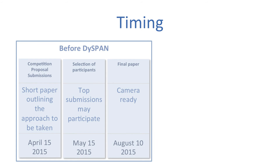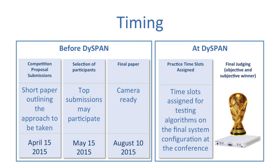To participate in the challenge, a two-page paper is to be submitted on the challenge track by April 15. The top submissions will be informed by May 15 that they can compete in the challenge. These teams can buy National Instruments hardware at significant discounts if required or desired. A camera-ready paper is to be submitted by August 10 and the final competition will run at DicePan.